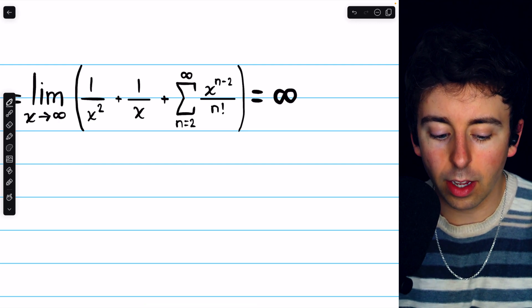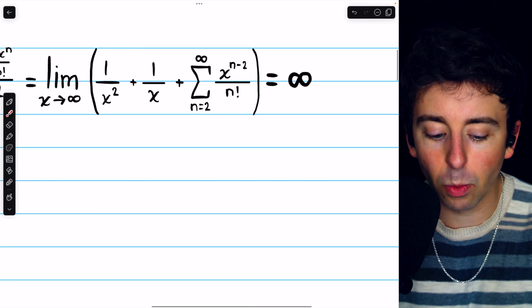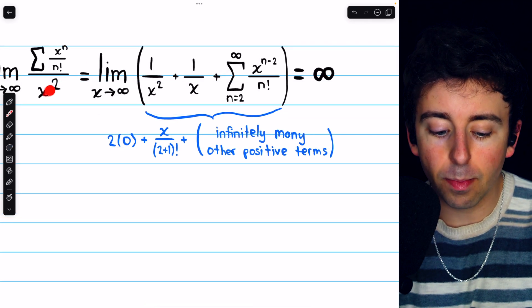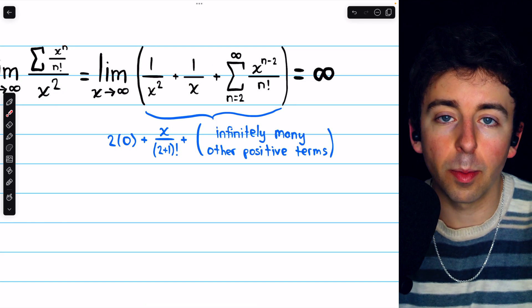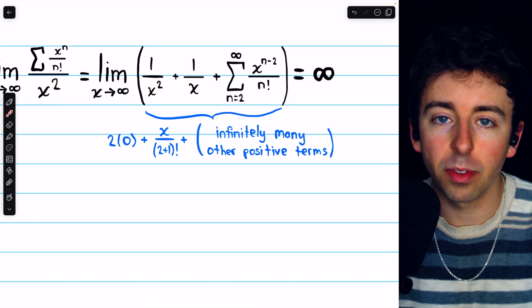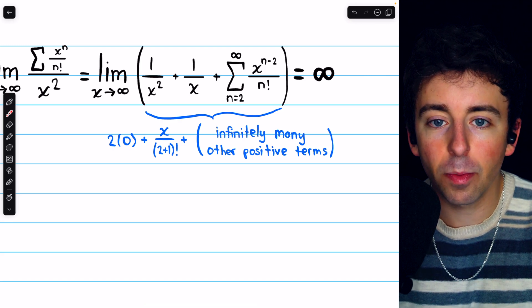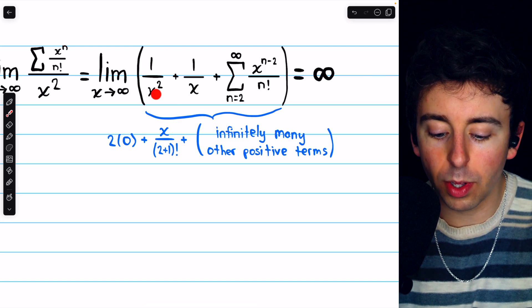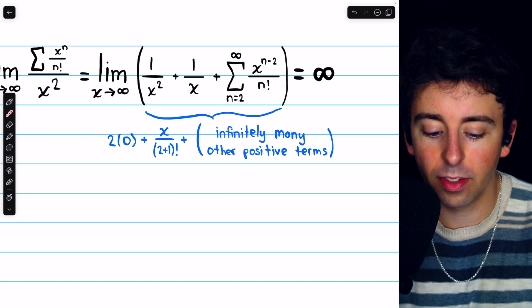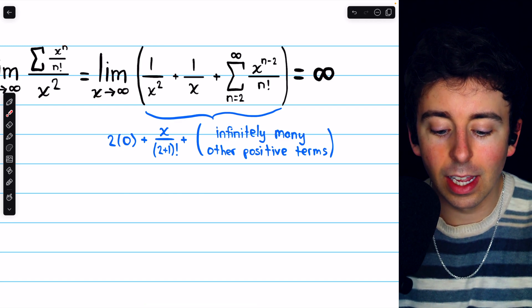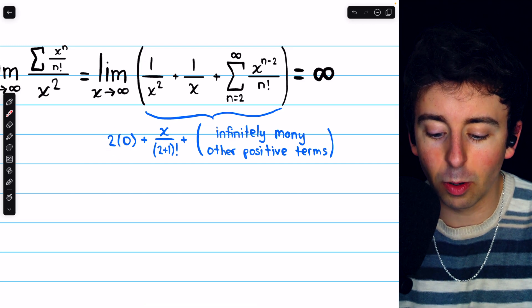We can also think of the breakdown of terms here in a little bit more detail. Because we divided by x to the power of 2, we took out the first two terms from the series. Those are the terms that have x in the denominator. And each of those terms with an x in the denominator will certainly just be 0, since x is going to infinity. So we have two of those terms that are going to 0.